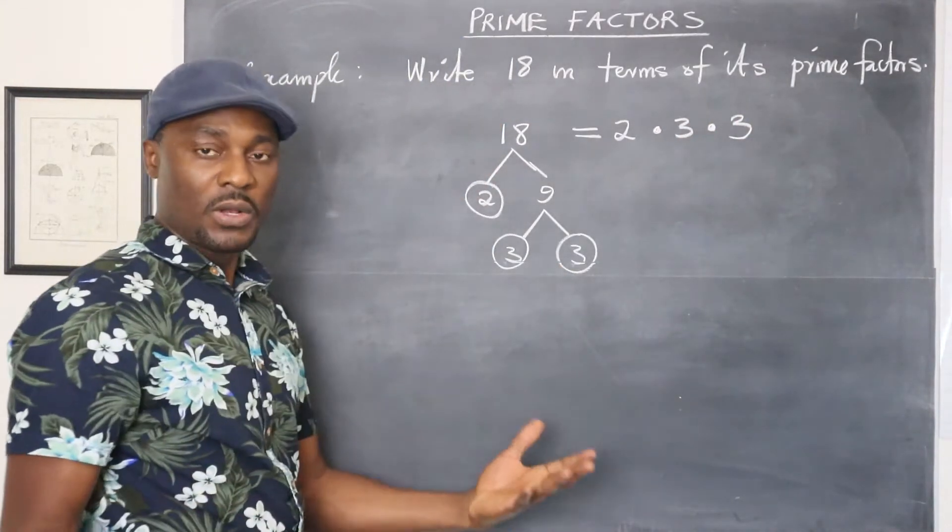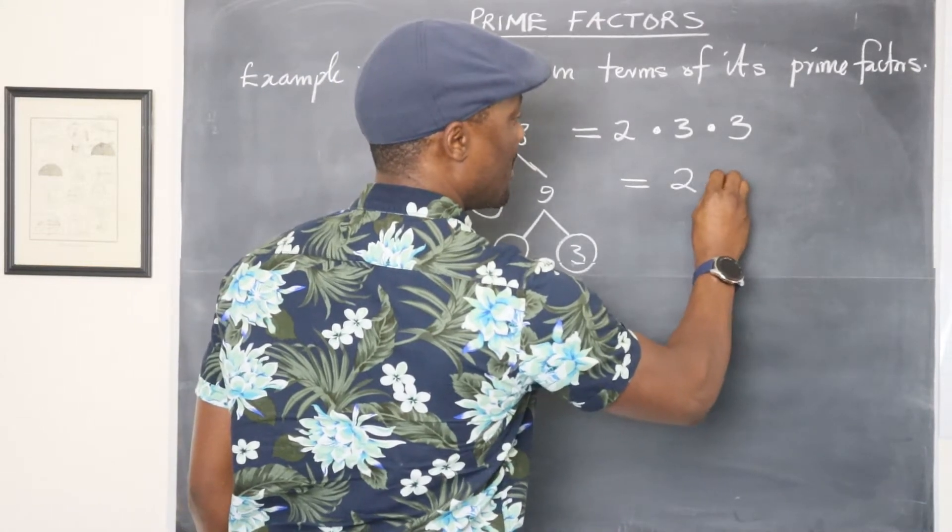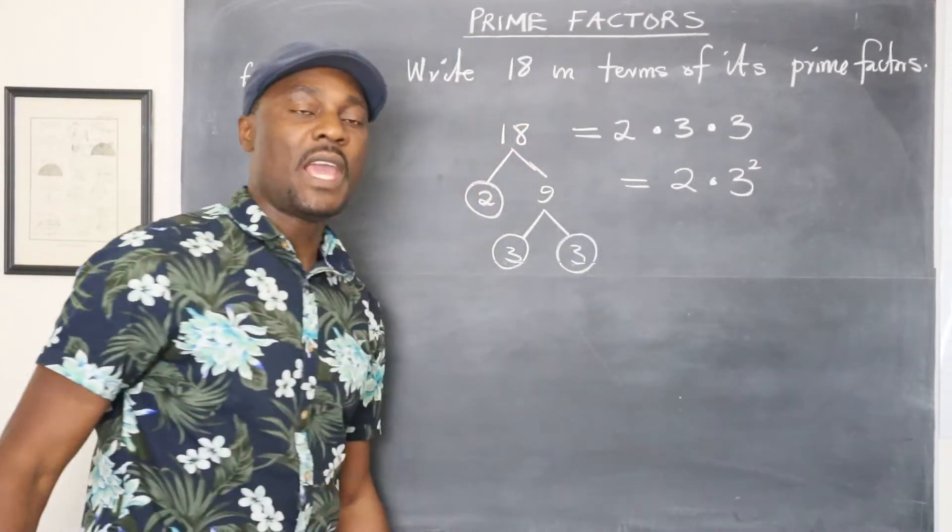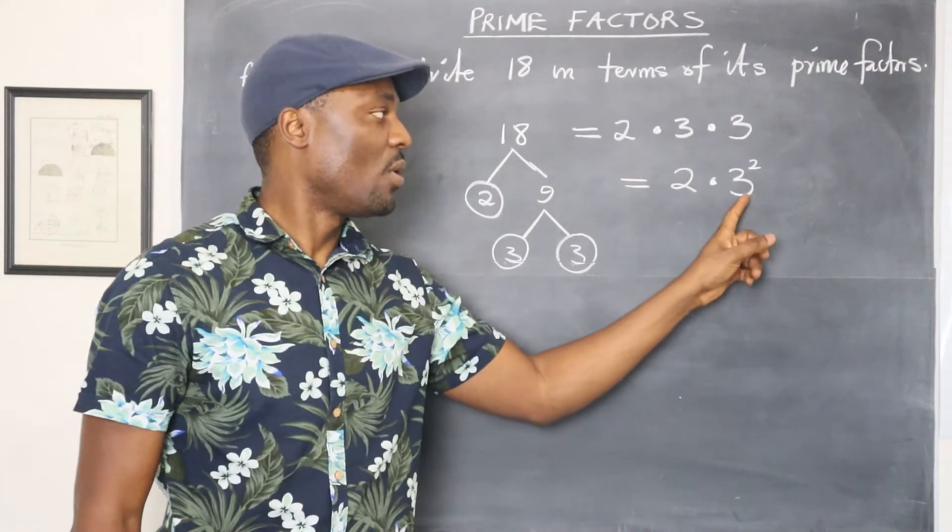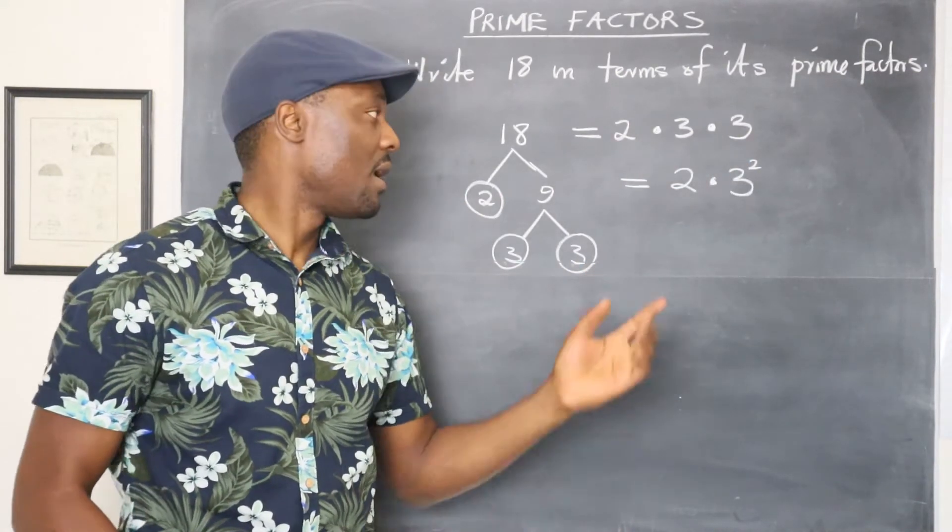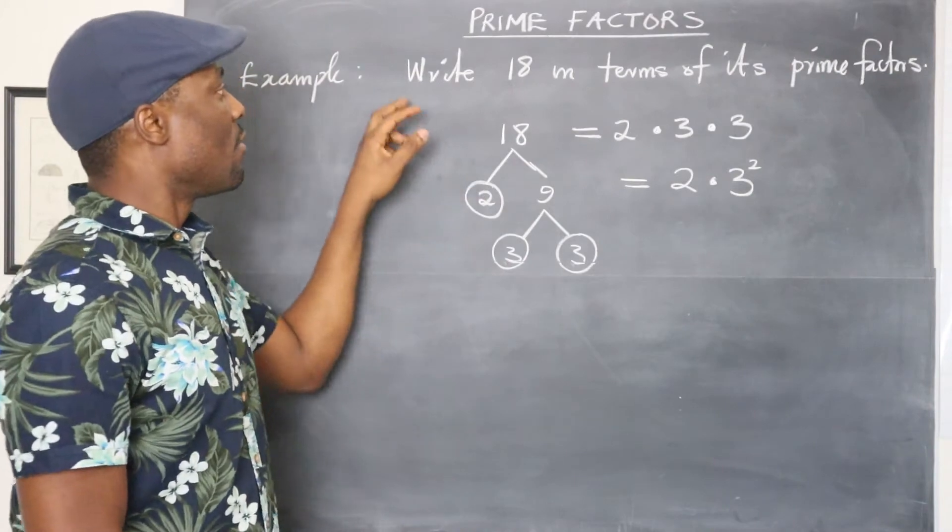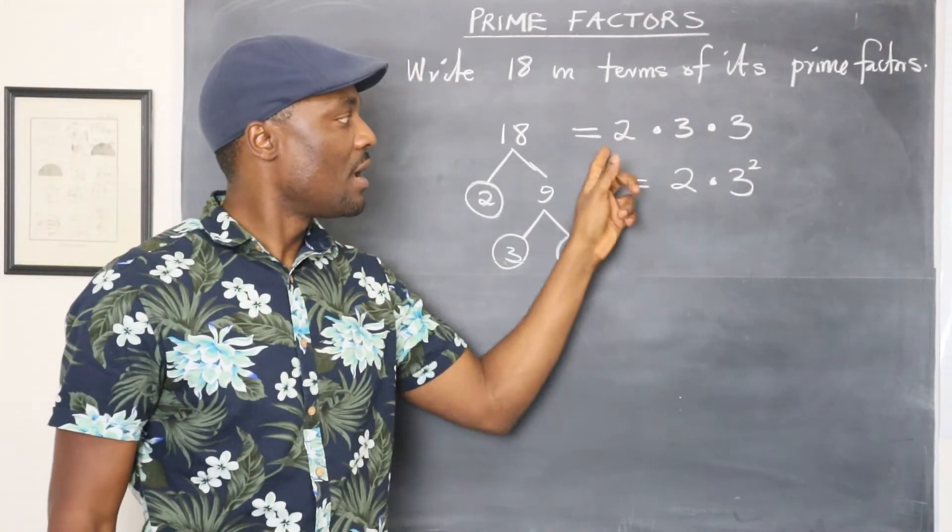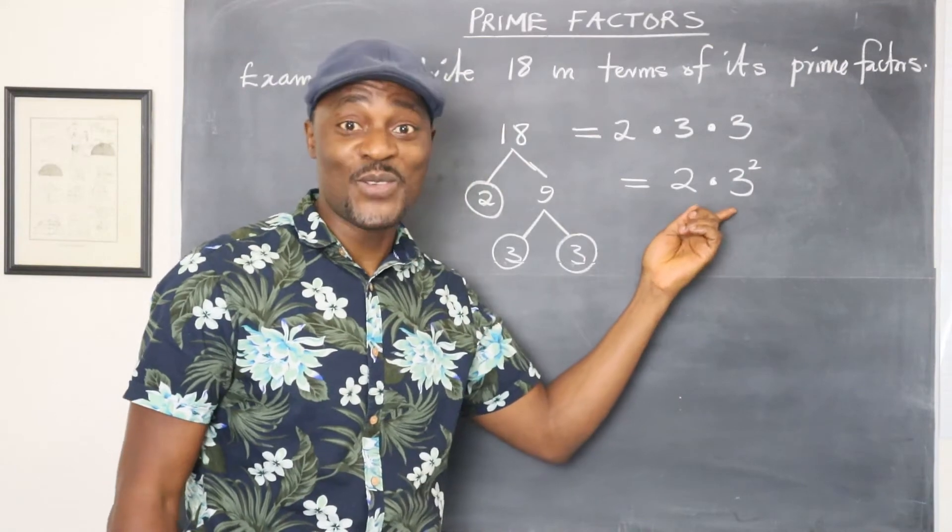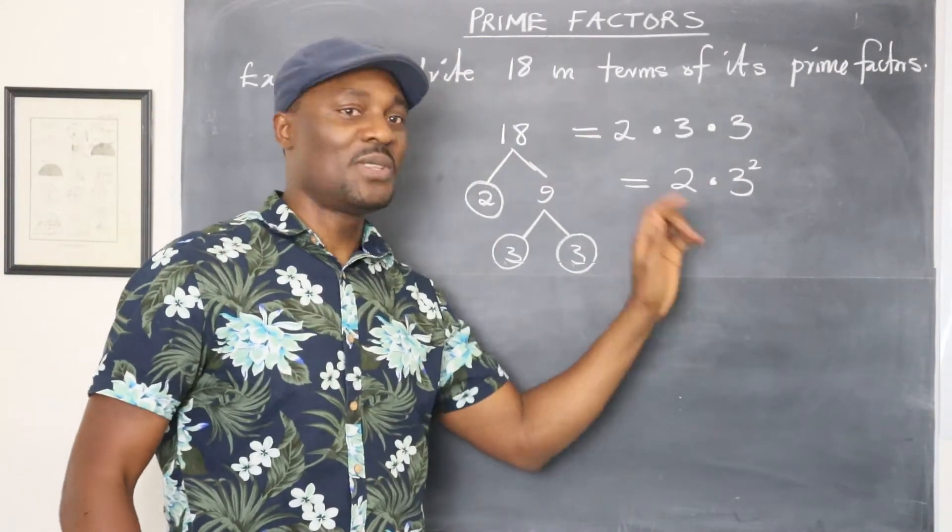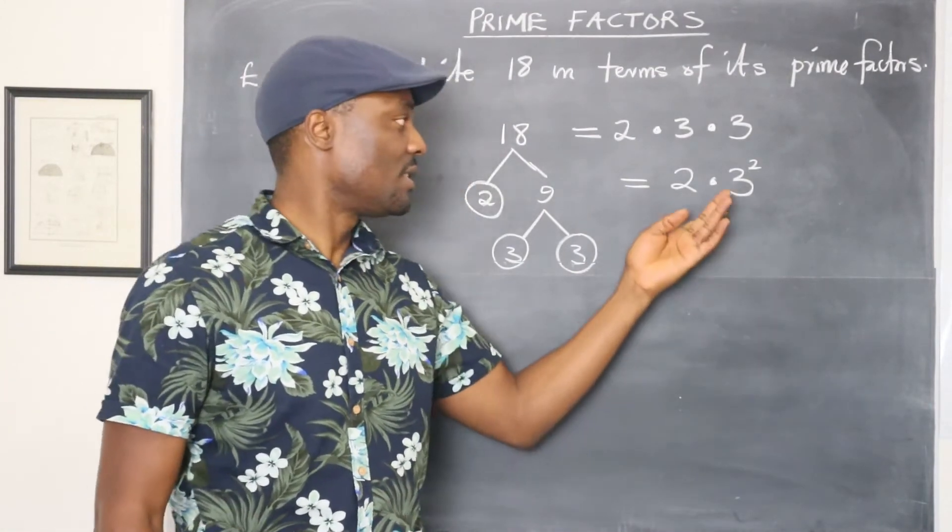The shorthand version of this, which we call the exponent form, is to say this is the same thing as 2 multiplied by 3 to the second. Because you have 3 twice and then you just put a small 2 there, which is the exponent. Which simply means you have to multiply 3 by itself twice the way we wrote it the first point here at the top here. Basically, that's what you do. So writing 18 in terms of its prime factors will be either this way or this way. The reason why this method is good is that it saves space and sometimes that's the only way you can use it because you might need to flip this to the back when you get to logarithmic functions or calculus or something. So this is important that we master.